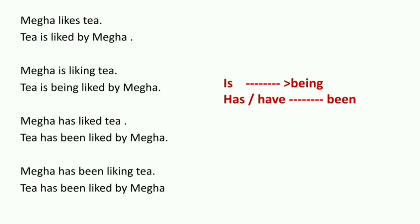Third sentence: 'Mega has liked tea.' Here 'has' is already there as a helping verb, so add one more — 'been.' The passive becomes: 'Tea has been liked by Mega.' 'Has' stays, 'been' is added, and the verb is in third form.